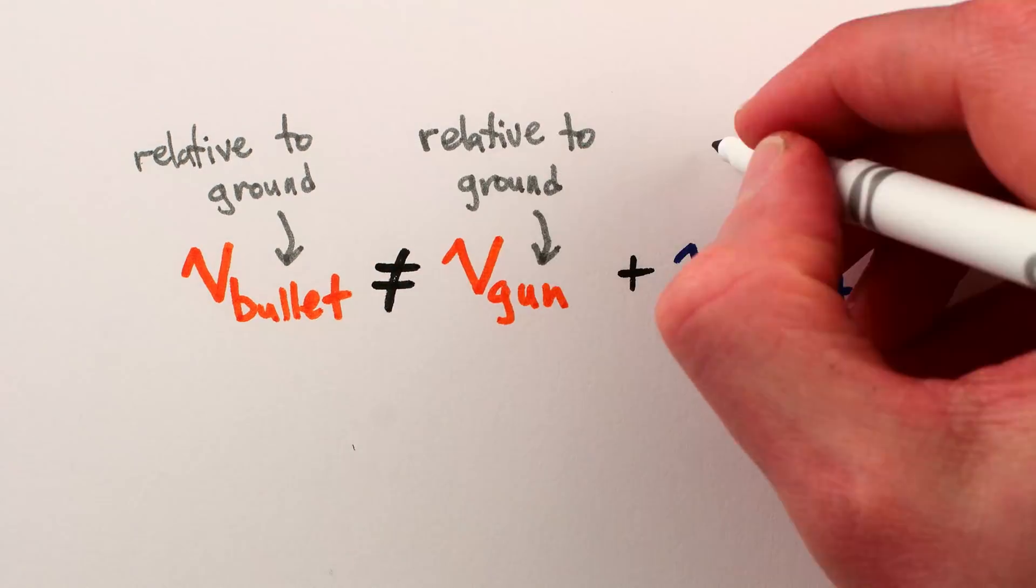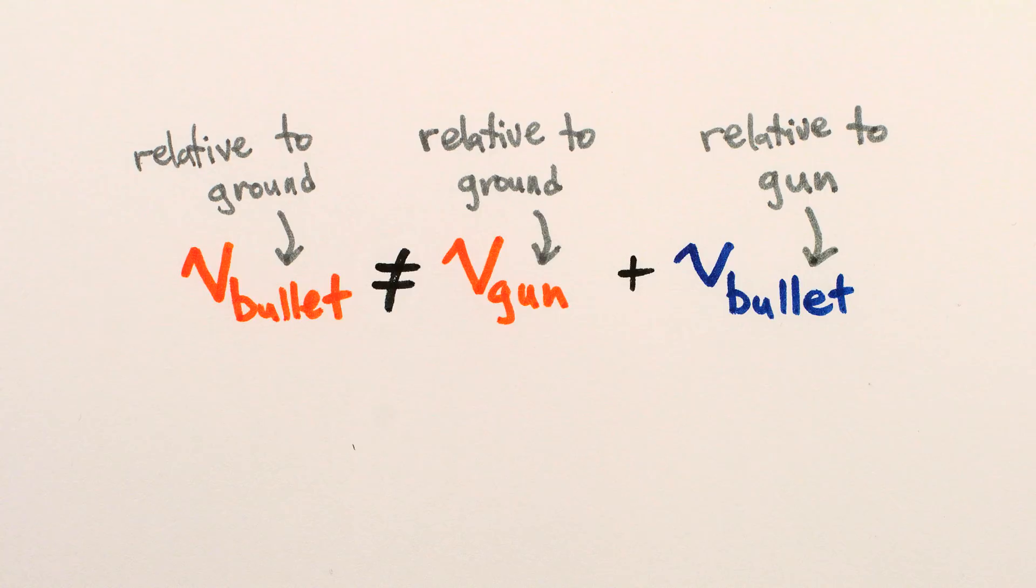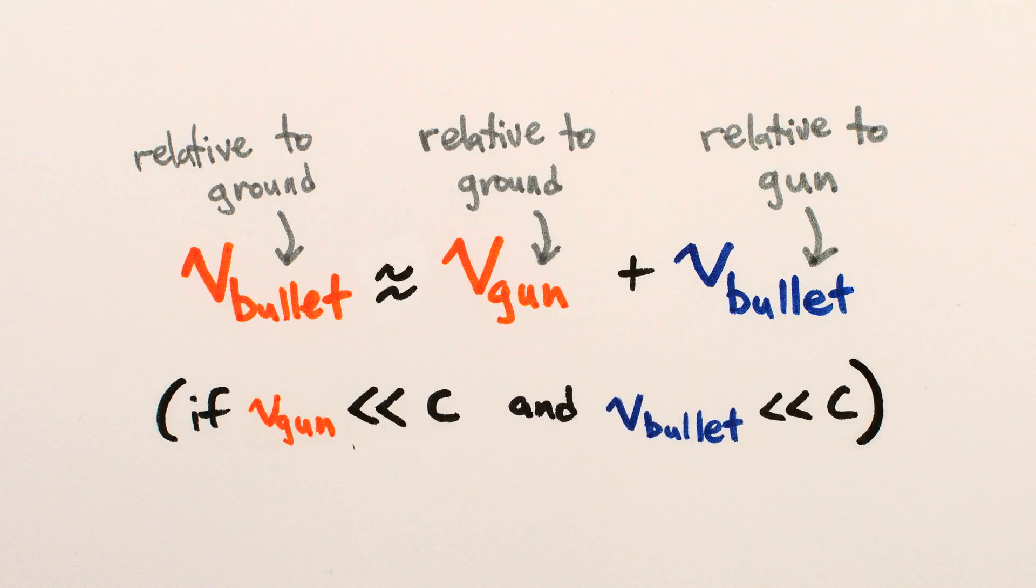In our universe, velocities don't simply add up when you change perspective. They almost do for things moving much slower than light, which I'll explain in a bit, but in general, that's not how our universe behaves.